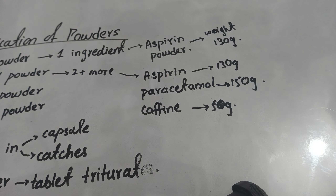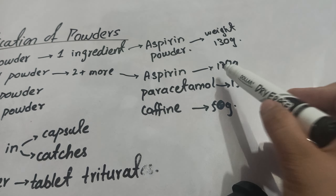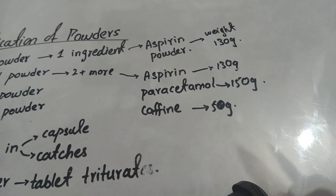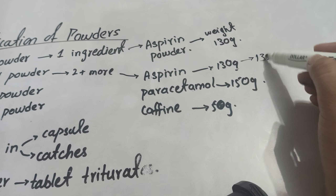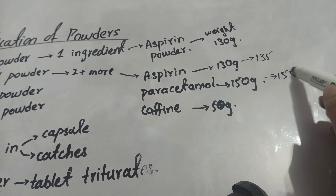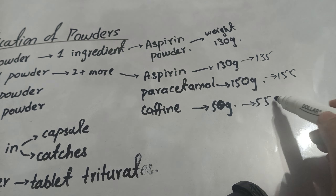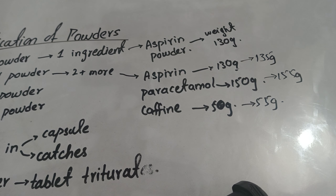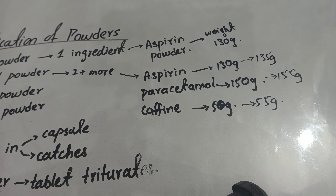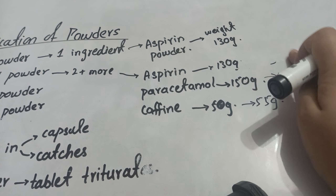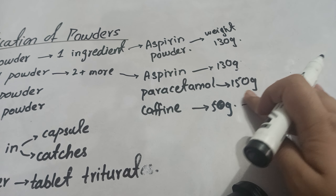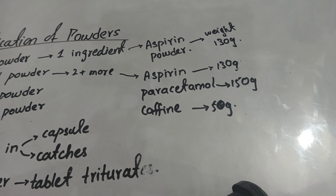When you have to weigh ingredients for a compound powder — for example 130 grams, 150 grams, and 50 grams — you should take a little more than required. For example, take 135 grams, 155 grams, and 55 grams respectively. This is because some amount of powder will stick to the spatula, the pestle, and the mortar, so there is a chance that the exact weight cannot be accurately measured. Therefore you take some extra amount to account for any loss. After weighing, you mix all of the ingredients together and your preparation is ready to use.